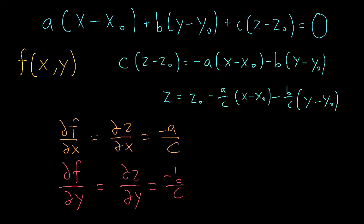Now we can rewrite our equation of the tangent plane using the partial derivatives of our function instead of the coefficients a, b, and c. The coefficients of x and y in the tangent plane equation are going to be the partial derivatives of the function we're trying to approximate, evaluated at the point we are making a tangent plane to.